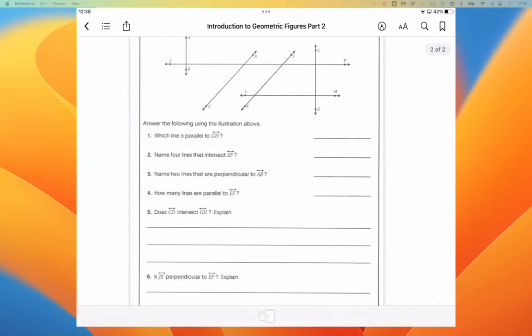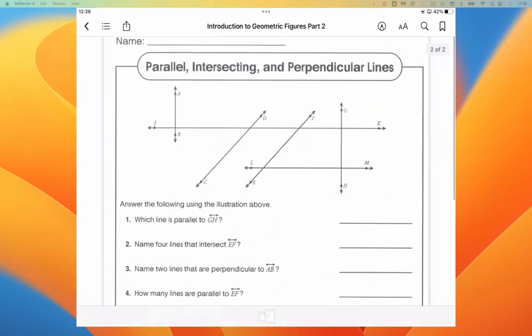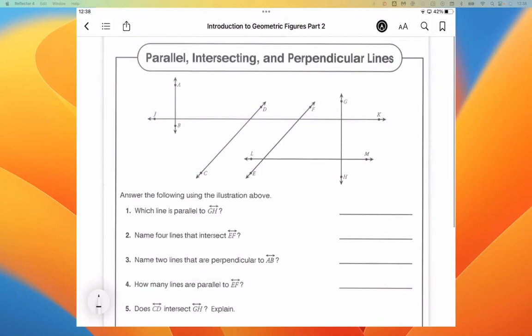On to the next page, we have more parallel, intersecting, and perpendicular lines. Which line is parallel to GH? Well, here's the answer. I don't have proof that any of them are. So what we need to do is we need to doctor this a little bit. We're going to add an arrow there, an arrow there, two arrows here, two arrows here, and then three arrows here. That must be done in order for us to make any statement. That's how they should have came to us.